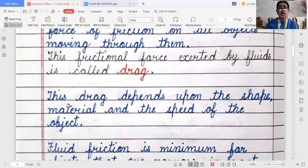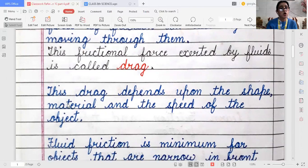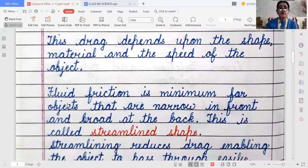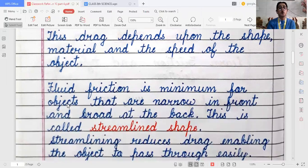This drag depends upon the shape, material, and the speed of the object. Now fluid friction is minimum for the objects that are narrow in front and broad at the back, and this type of shape is called streamline shape.